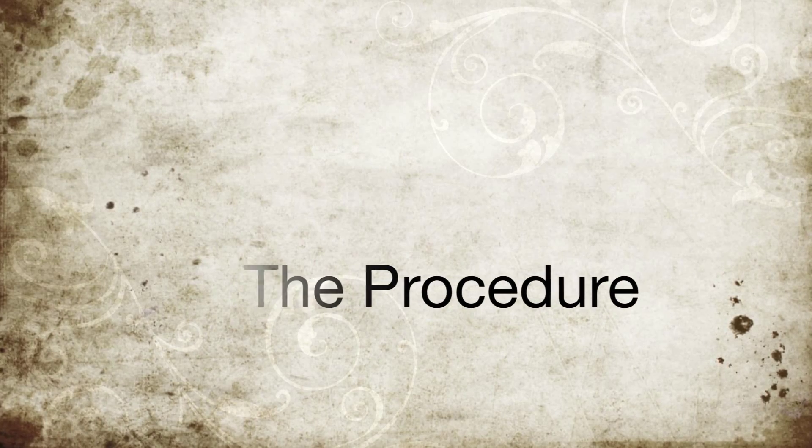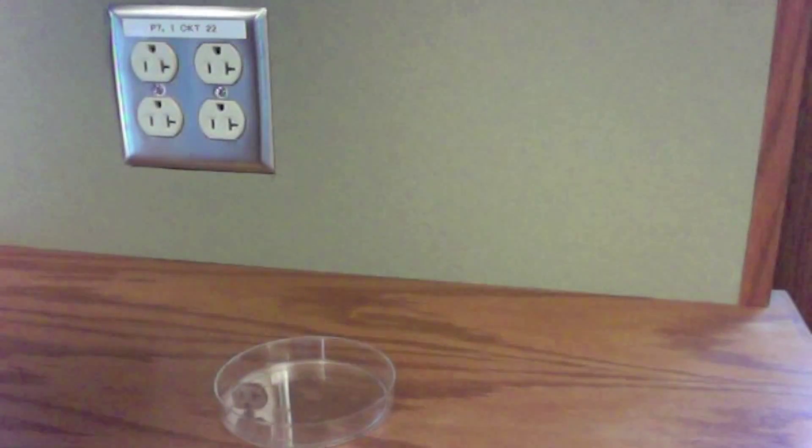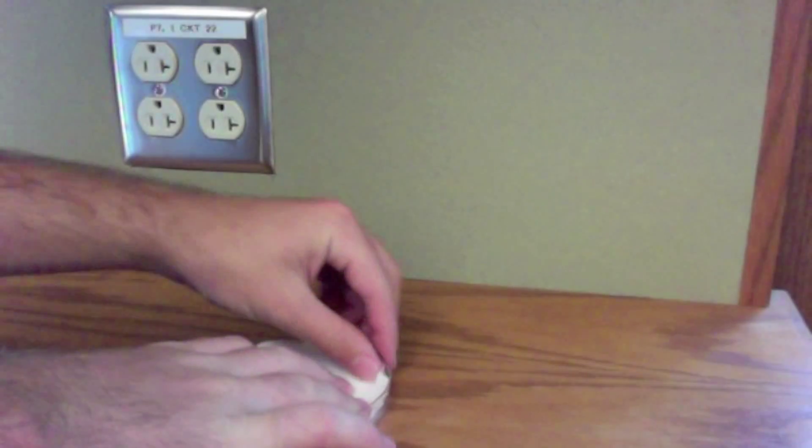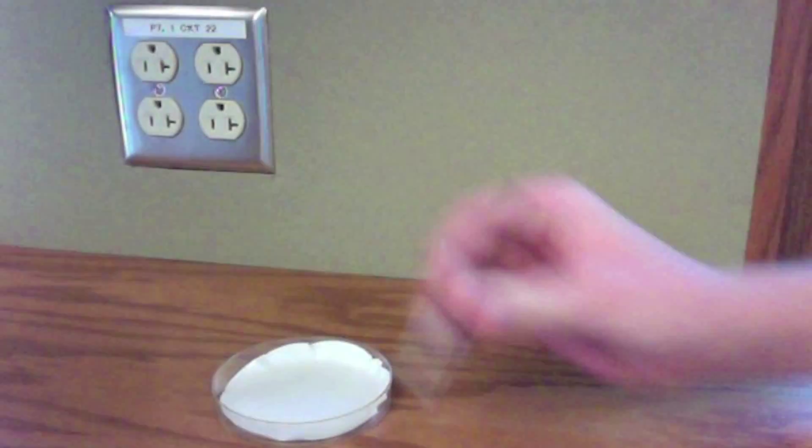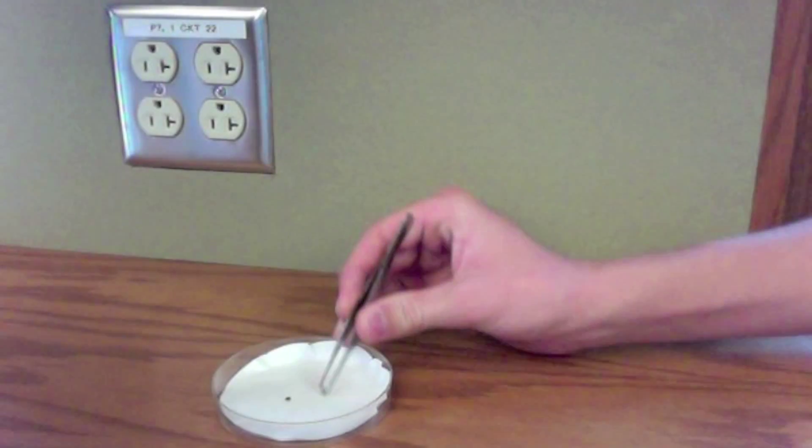We used the dishes and put a double layer of filter paper on the bottom. Next, we used tweezers and put 5 seeds in each of the dishes on top of the filter paper.